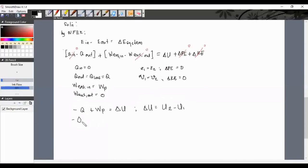We have -Q + paddle work = U₂ - U₁, or finally U₂ = -Q + paddle work + U₁.